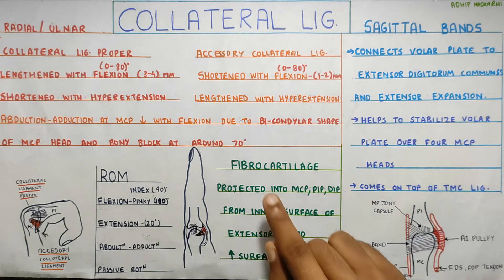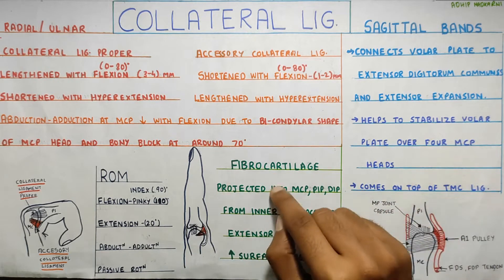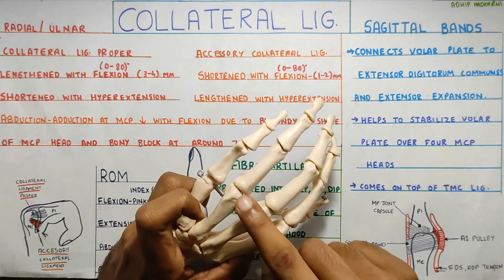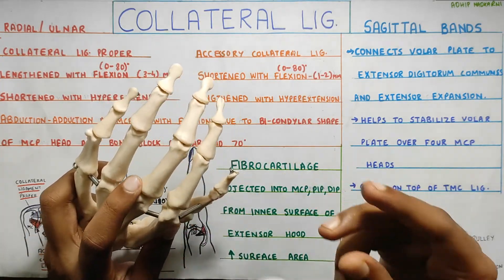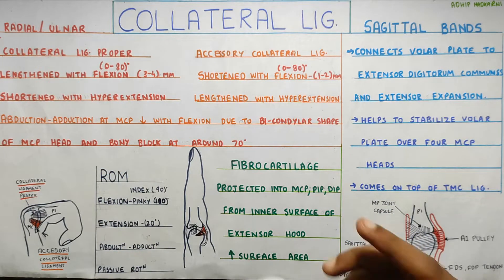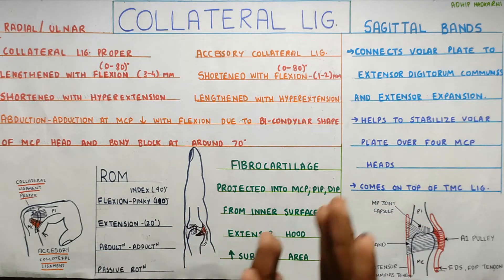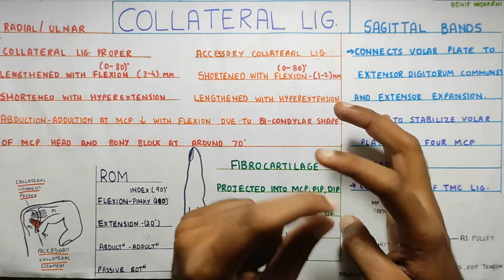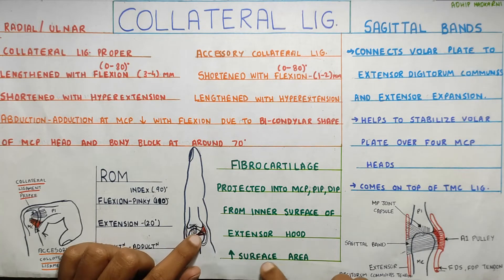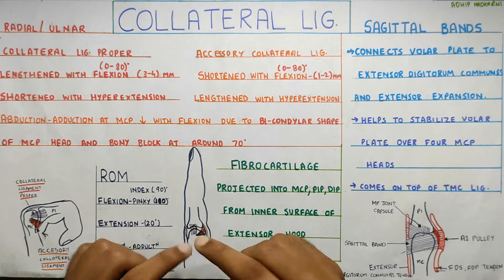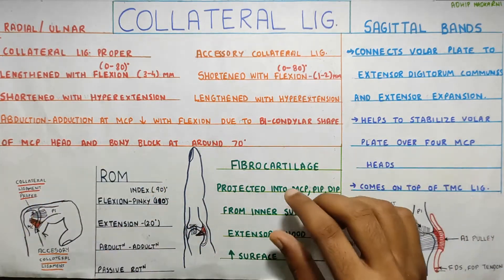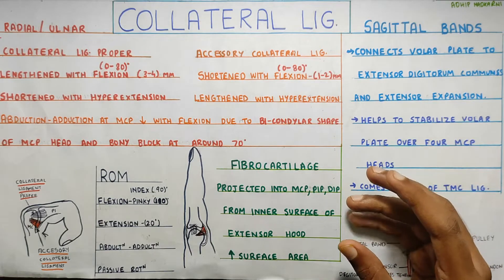Next is the fibrocartilage. This fibrocartilage is projected into your MCP, PIP, and DIP joints. It comes from the inner surface of the extensor hood, whose function is to connect the tendons to the phalanges. The fibrocartilage helps in increasing the surface area of contact at the articulation, improving articulation and increasing the congruency at the joints.